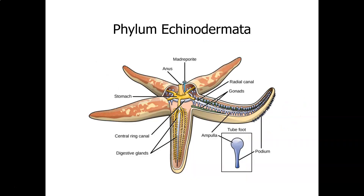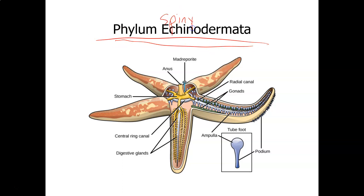Now we're moving on to the last invertebrate phylum — the phylum Echinodermata. 'Echino' means spiny, 'derm' means skin, so echinoderms are spiny-skinned animals. This is a sea star. One important feature of the sea star is that it has a water vascular system. We will be dissecting a sea star — there's a video of a sea star dissection attached to our Moodle page.